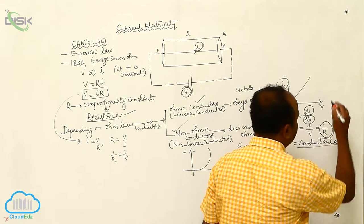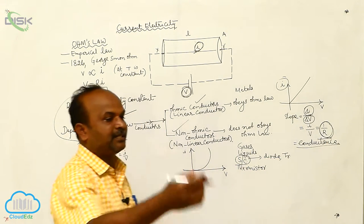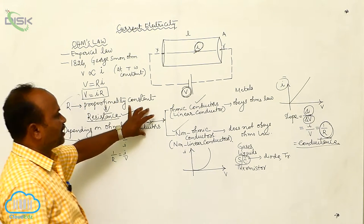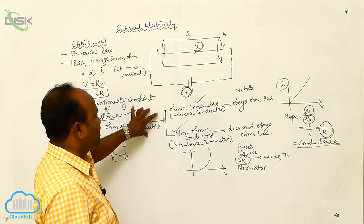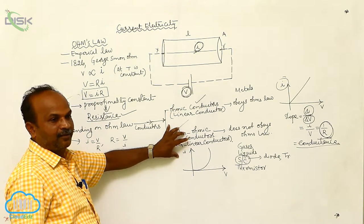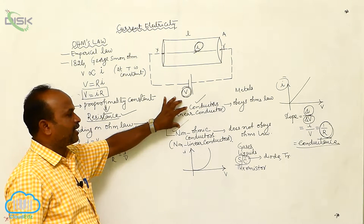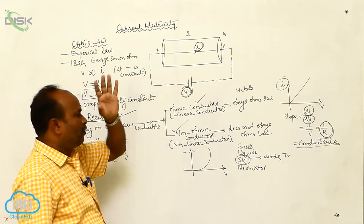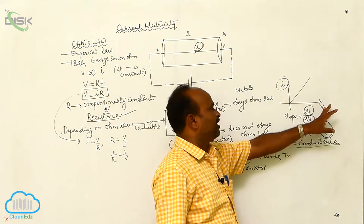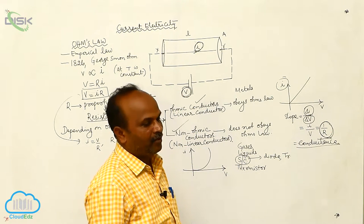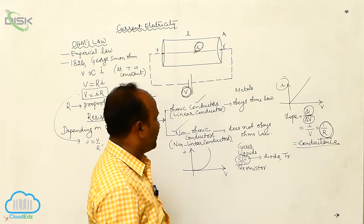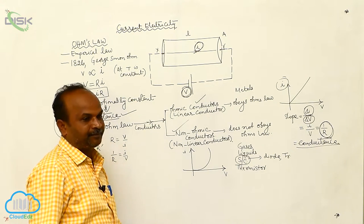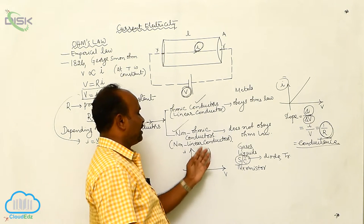The reciprocal of resistance is called conductance, which will be discussed later. Based on Ohm's law, all conductors are classified into two categories: ohmic conductors and non-ohmic conductors. A conductor that obeys Ohm's law is called an ohmic conductor, and its V-I graph is a straight line passing through the origin. For a non-ohmic conductor, the graph is not a straight line — it may be a curve.